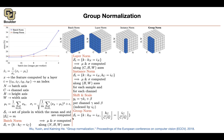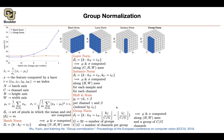For group norm, your SI fixes the batch dimension — so you do no statistics along the batch dimension. You then divide your channels into G groups, where C over G gives the number of channels per group. In our example, G equals two groups with three channels per group. You compute your statistics over the height and width dimensions as well as a group of C/G channels.